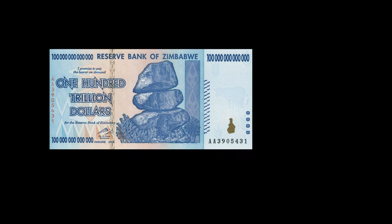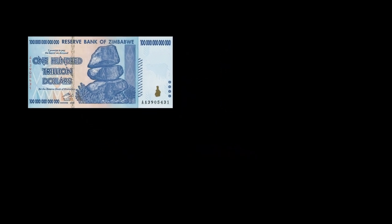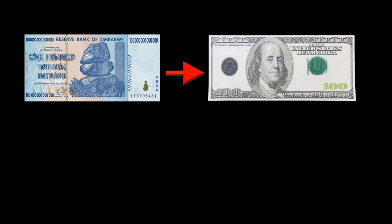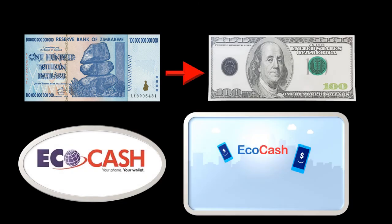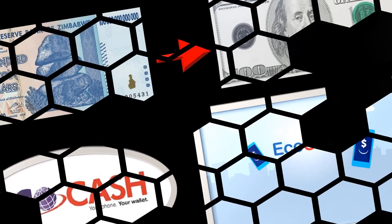Fortunately, the situation is not as bad today. This was due to the switch to US dollars in 2009 and the advent of eco-cash, which is a whole success story on its own — a perfect example of entrepreneurial talent. Also, the president was removed from power by 2017.